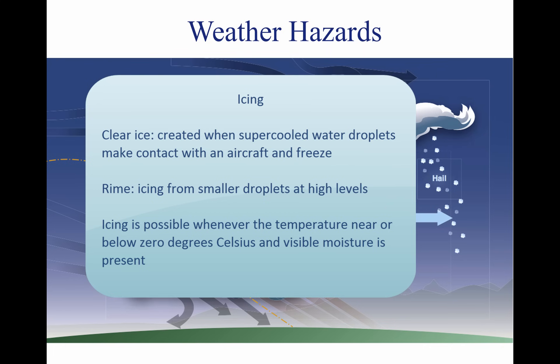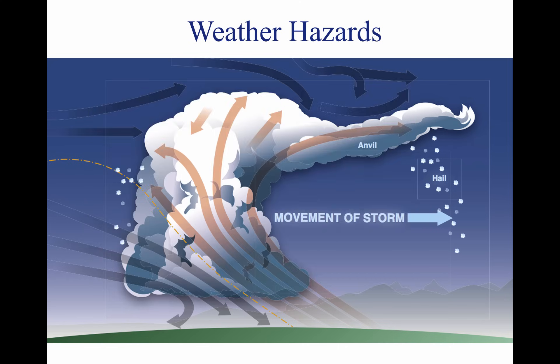Pilots should be alert for icing any time the temperature approaches 0 degrees Celsius and visible moisture is present. Hail competes with turbulence as the greatest thunderstorm hazard to aircraft. Supercooled drops above the freezing level begin to freeze, and other drops latch on and freeze to it, so the hailstone grows, sometimes into a huge ice ball. Eventually the hailstones fall, possibly some distance from the storm core. Hail may be encountered in clear air several miles from thunderstorm clouds. As hailstones fall through air whose temperature is above 0 degrees Celsius, they begin to melt, and precipitation may reach the ground as either hail or rain.